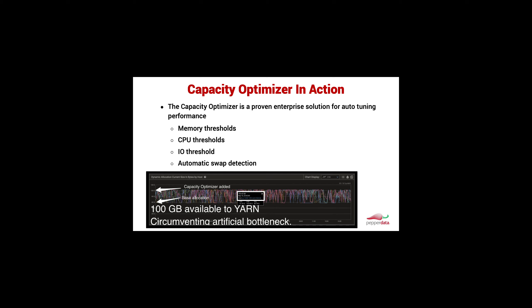With this feature, we're looking at a number of things to maintain safety in the environment and not overrun actual resources. We have memory thresholds, CPU thresholds, and IO thresholds so that we don't add more nodes when the IO subsystem is saturated. We're also doing automatic swap detection, measuring how much swap is taking place, and triggering a pullback when things get extreme — turning off the feature when needed so that we're not overrunning resources, even for workloads outside typical analytics use cases.